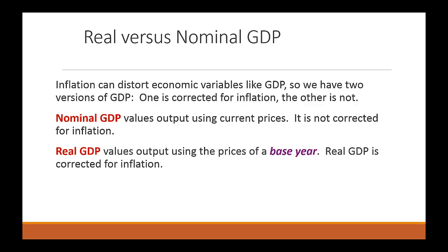As opposed to real GDP — real GDP values output using the prices of some base year. So it holds prices constant. Once the base year is identified, let's say the base year is 2005, then all the output in any year — whether it's 2005, 2006, 7, 8, 9, or what have you — all the output in that year is evaluated using the 2005 prices. We refer to this a lot of times as real GDP using constant prices.